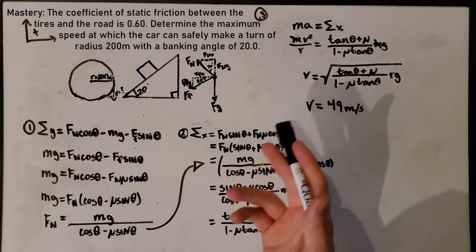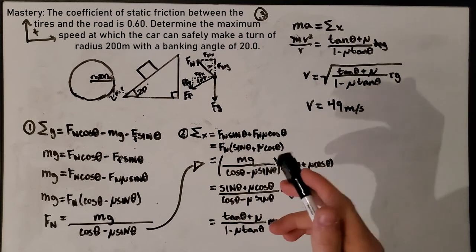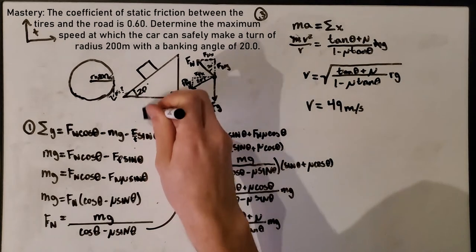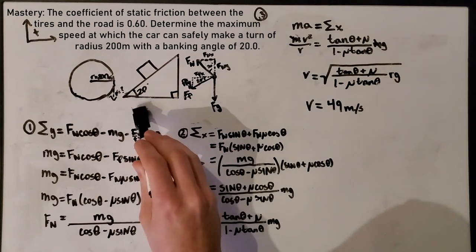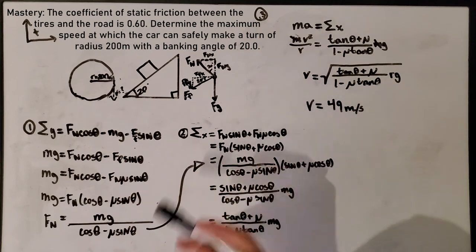Question number three is mastery, so it's the hardest one. The question says that the coefficient of static friction between the tires and the road is 0.6. Determine the maximum speed at which the car can safely make a turn of radius 200 meters with a banking angle of 20 degrees. We have all of our information: banking angle 20 degrees, radius 200 meters, coefficient of friction, and our velocity is unknown, which is what we're solving for.